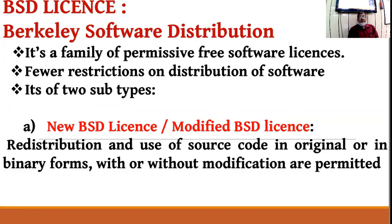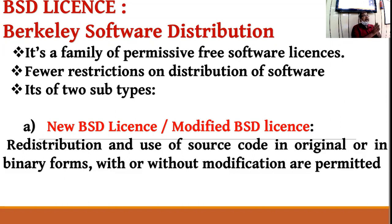BSD is of two types: New BSD license and Simplified BSD license. In the case of New BSD license, also called Modified BSD license, the source code can be given in two ways: either as original source code or in binary form. When you get the source code in binary form, it means you get an encrypted copy, not the original.